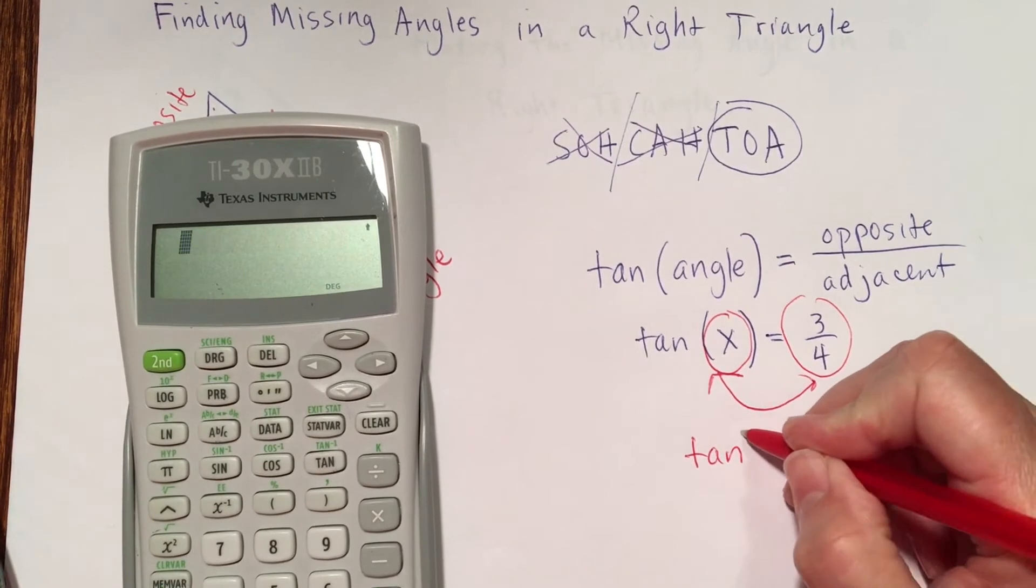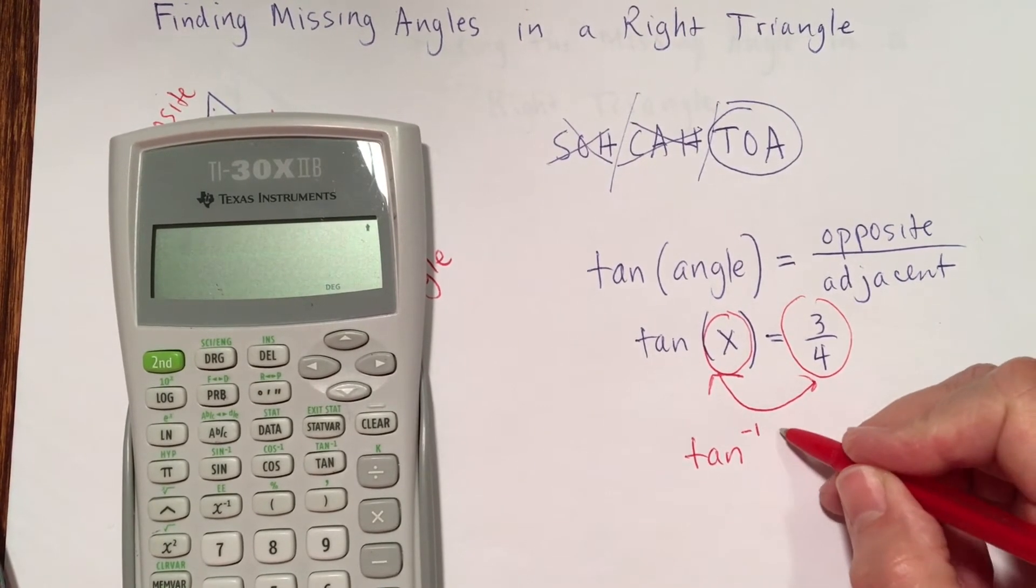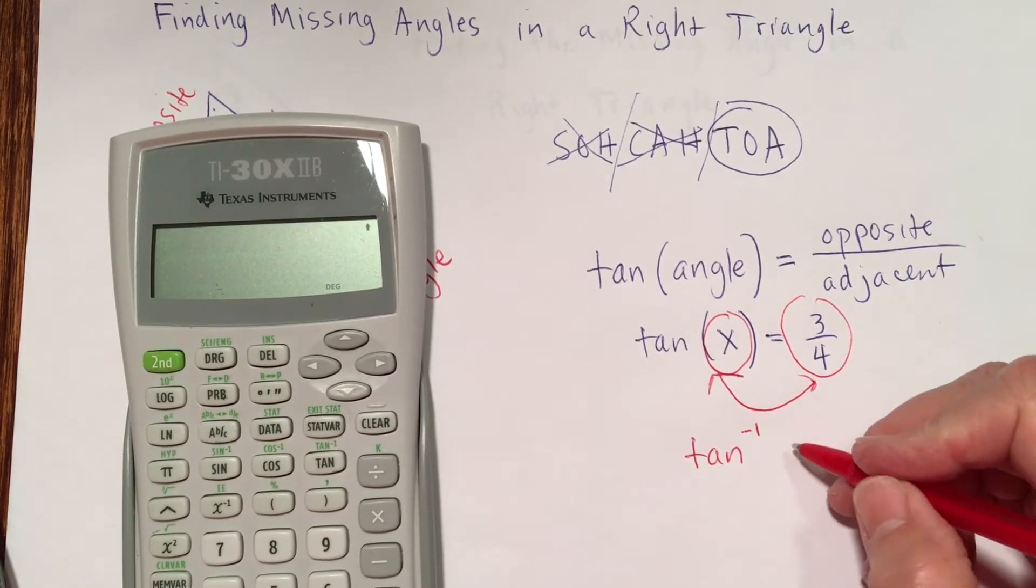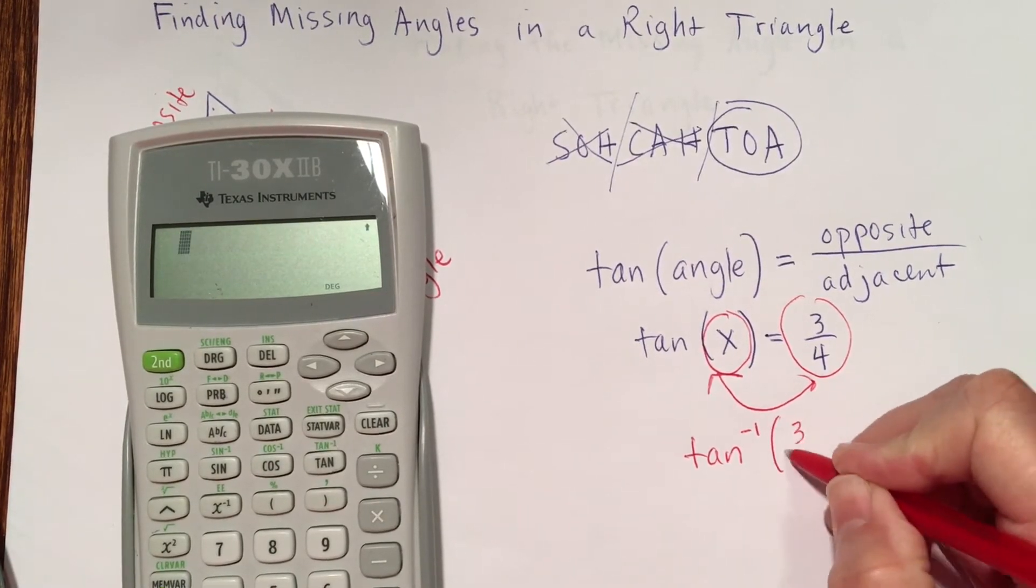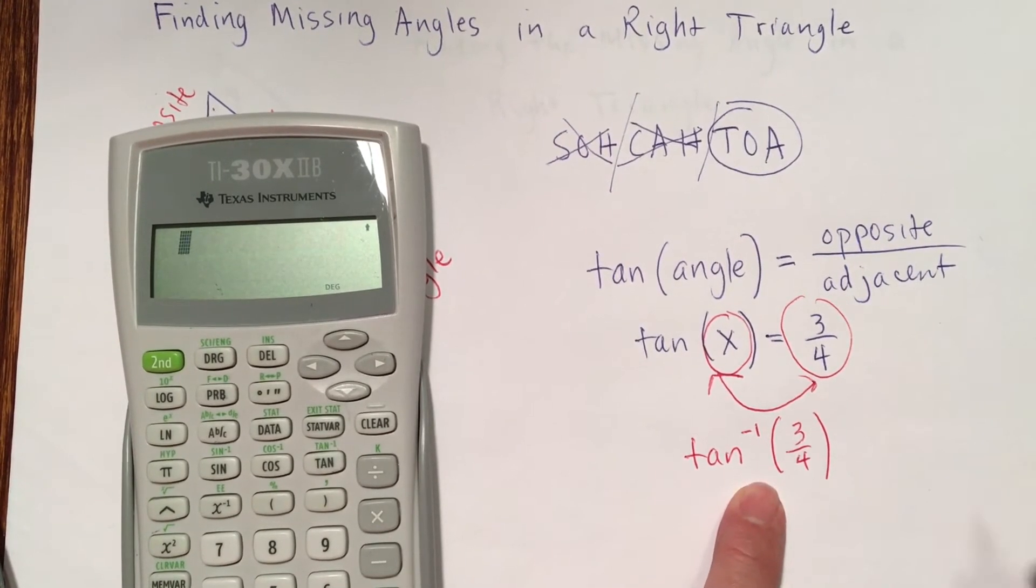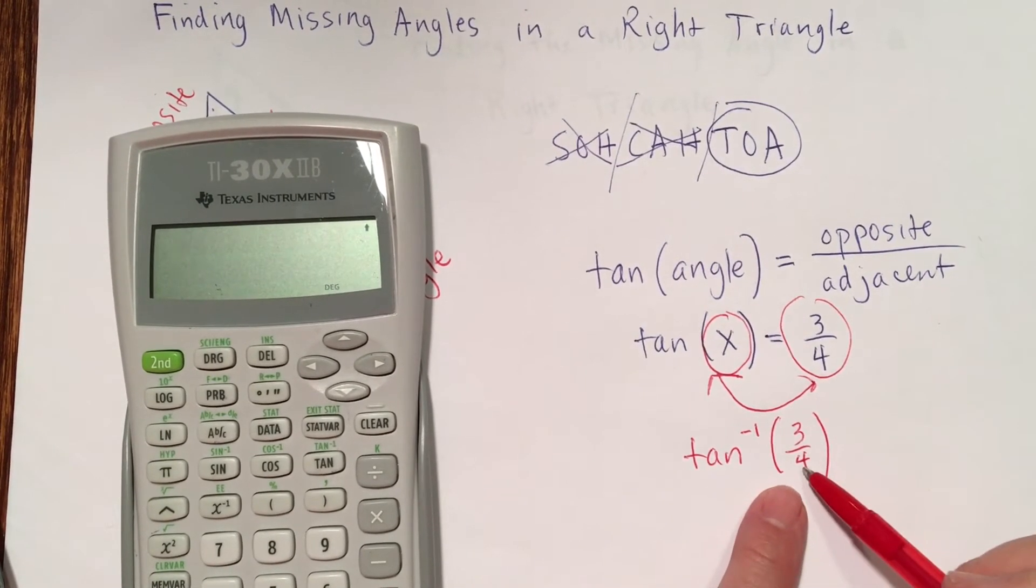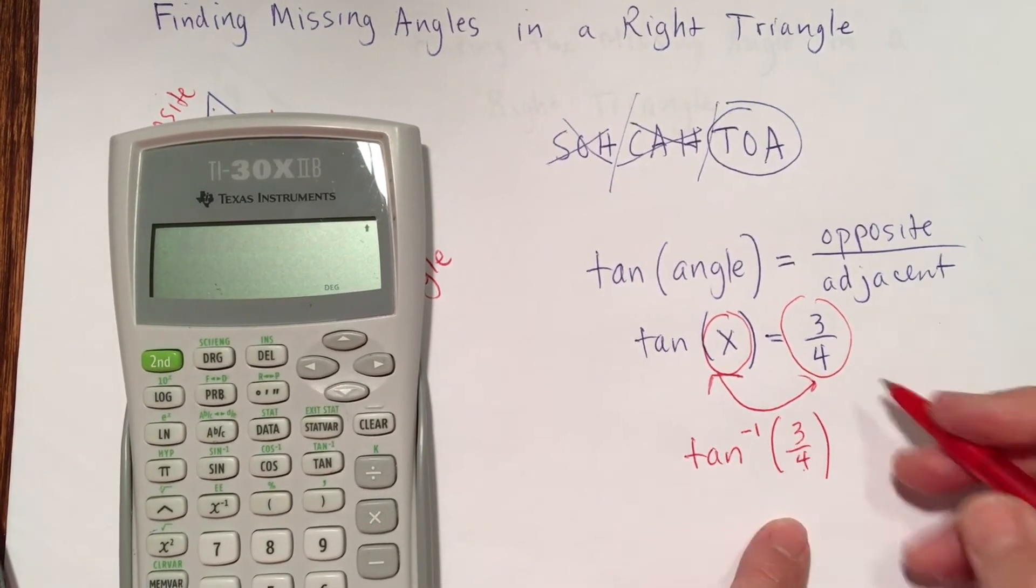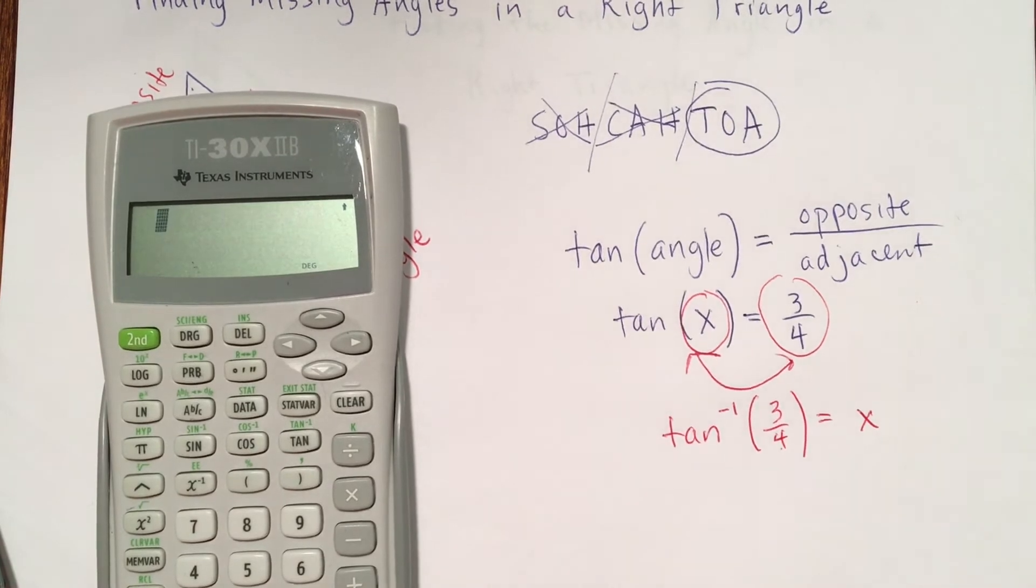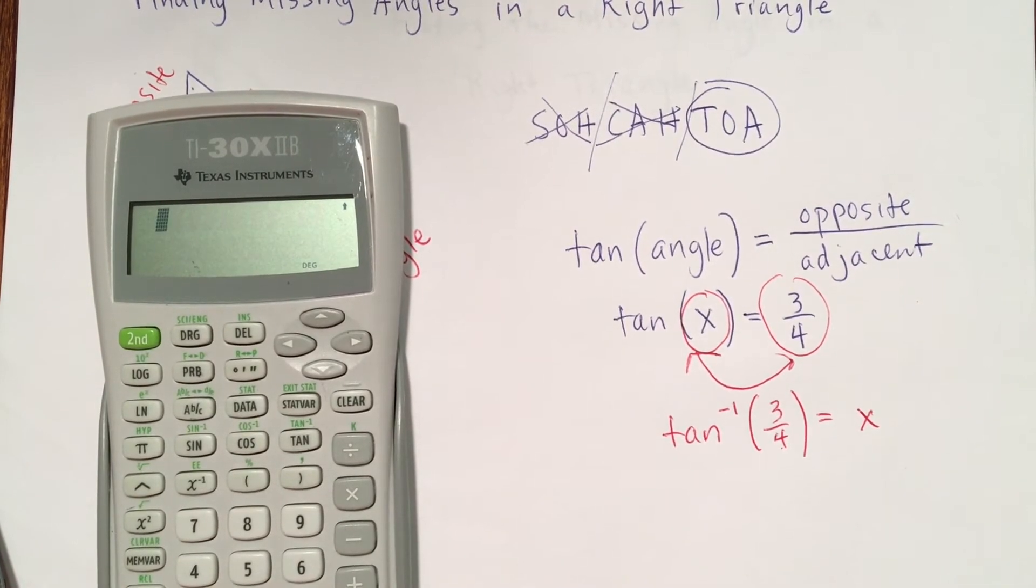That is not 1 over tangent. A lot of people get confused with that. That is the inverse tangent. The 3 fourths is now with inverse tangent. And then the x lands on the other side of the equals sign. The x is by itself.